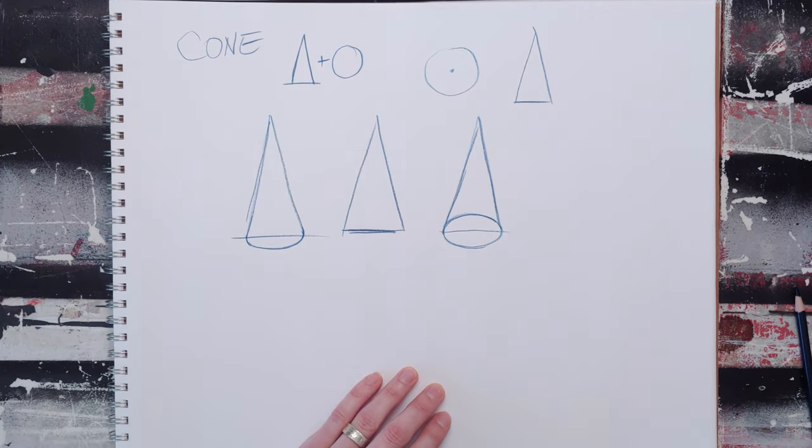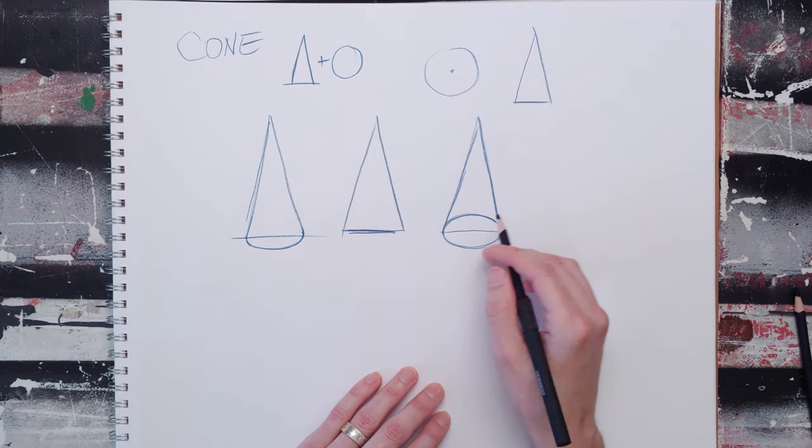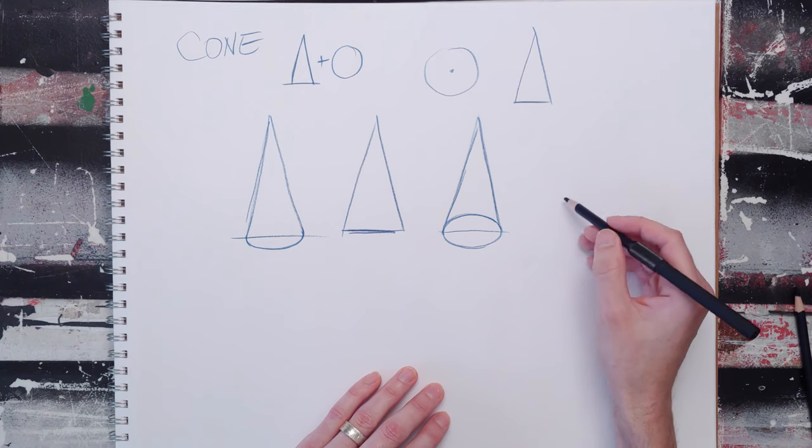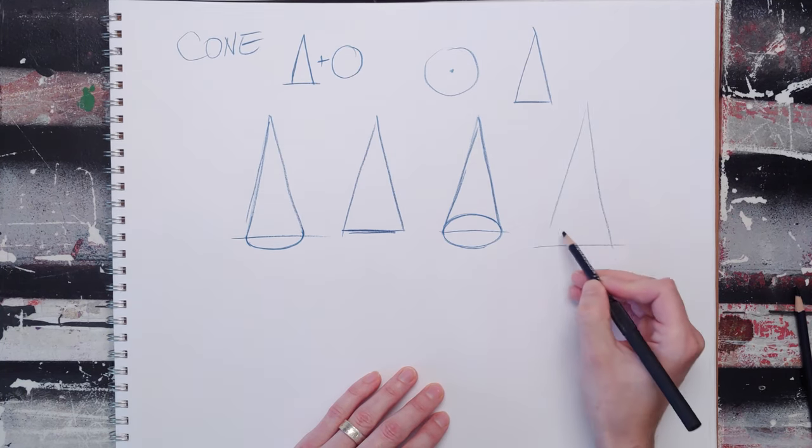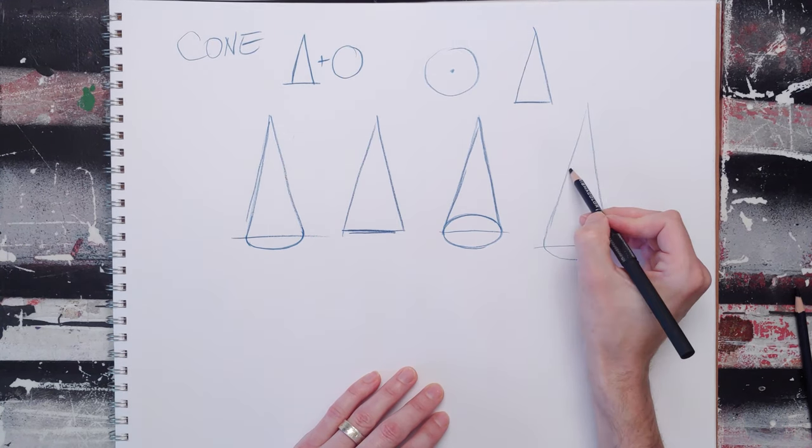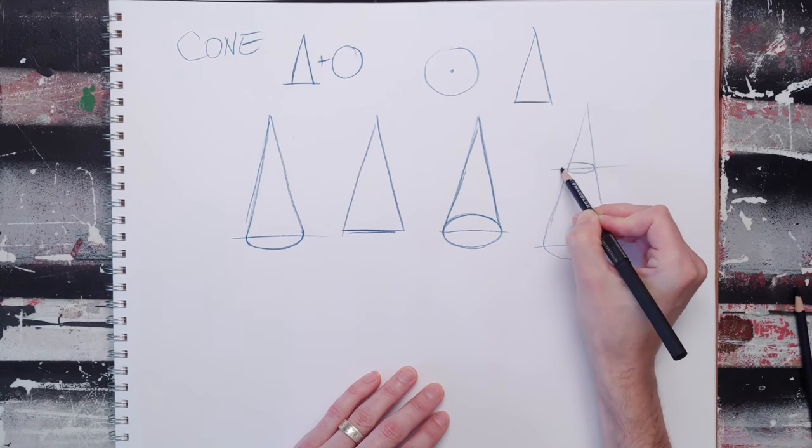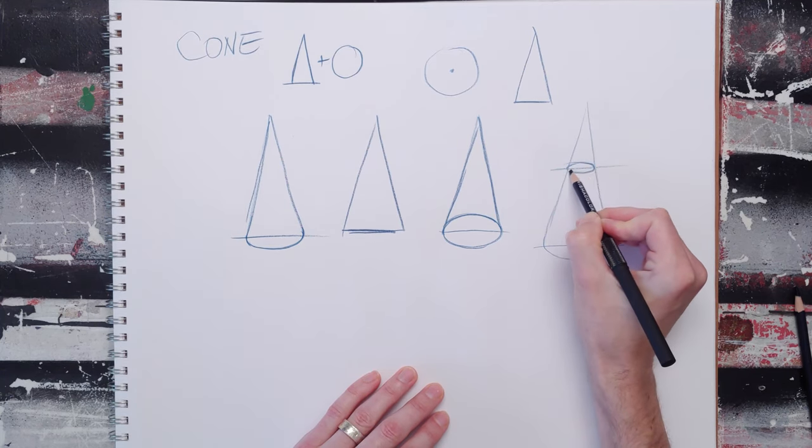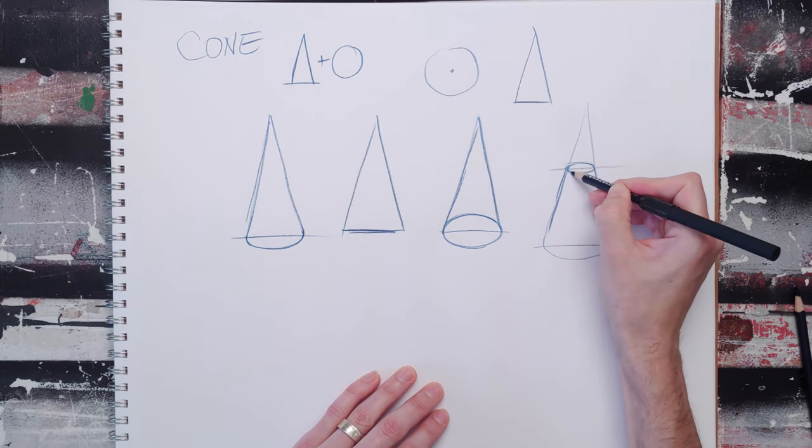These are basically the only two cones you can draw. Everything else is a variation on the cone, and you're either cutting or taking away. If you cut the cone, you can draw your triangle, convert it to form, cut your cone off wherever you feel like it, add an ellipse, and you have a little cut-off cone.